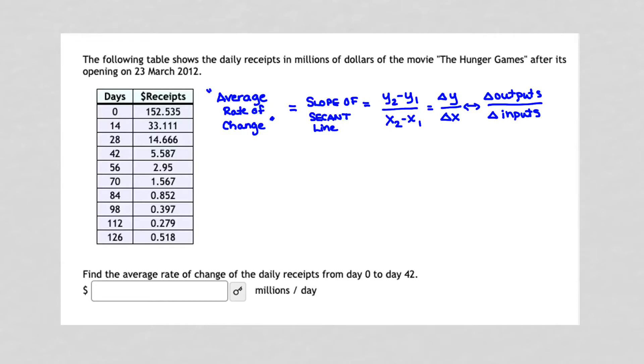Average rate of change has to deal with an average over time. So you will always have two points to calculate a slope when you're looking for an average rate of change. So let's find our two points.